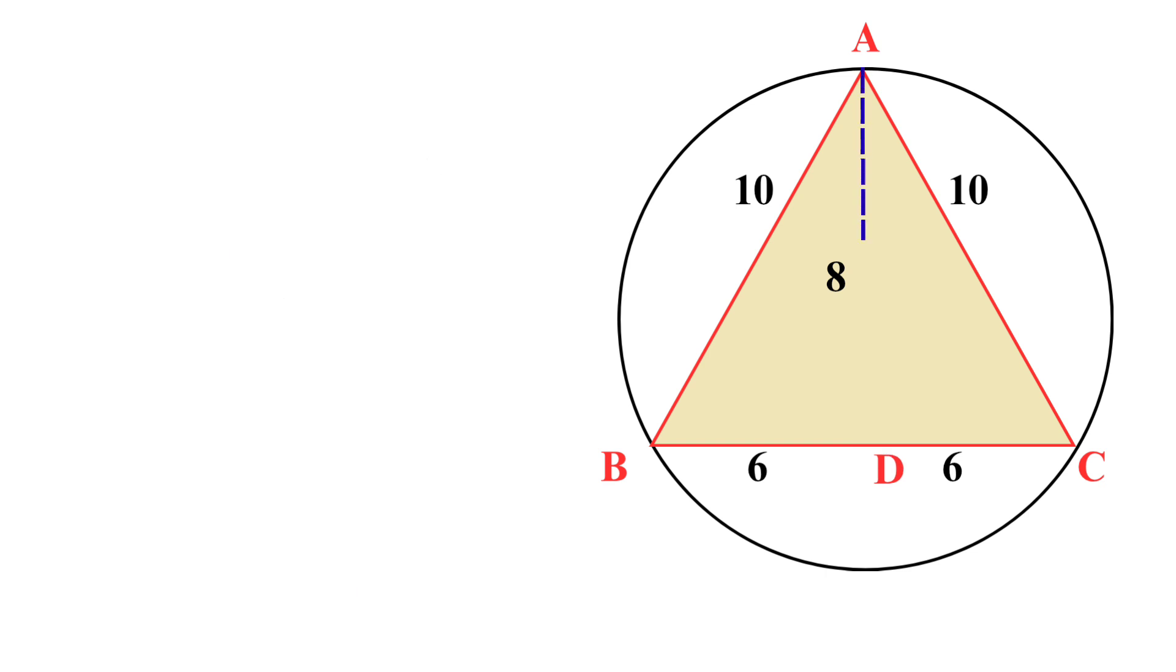We now extend the perpendicular AD until it meets the circle at point E. Notice that this perpendicular divides BC into two equal segments, which means it must also pass through the center of the circle. Let's denote the center of the circle as O.